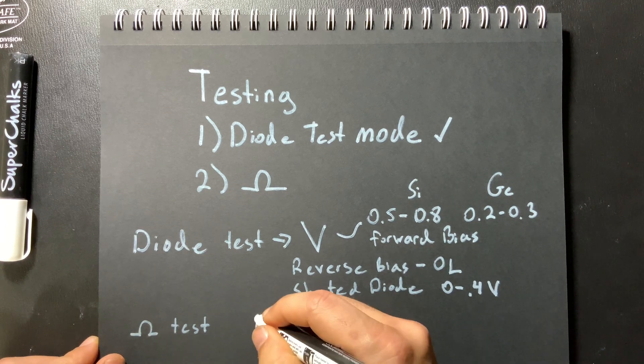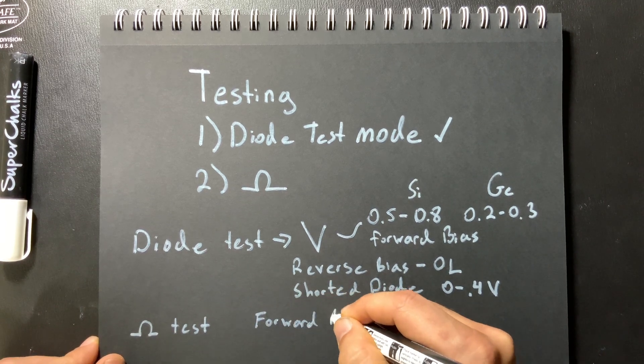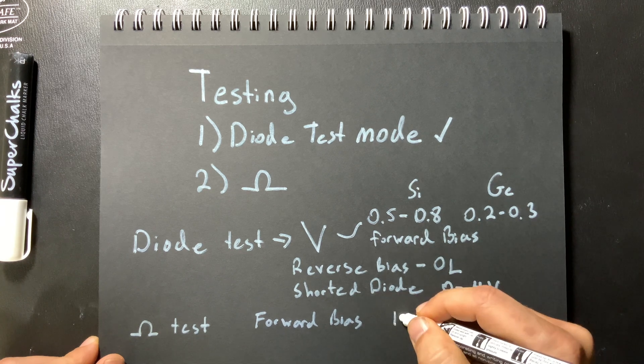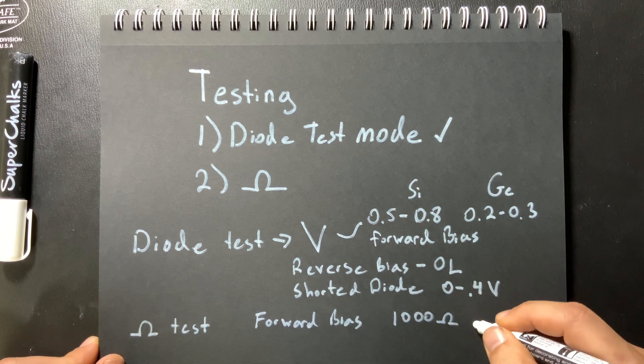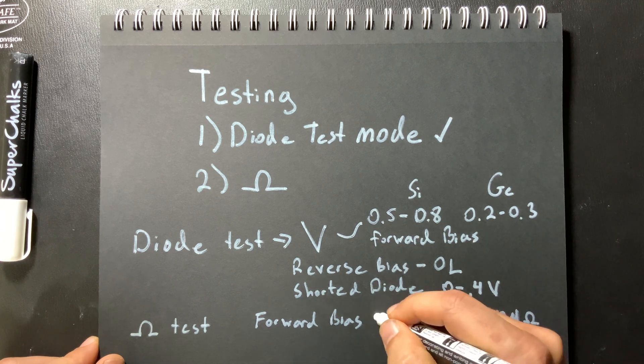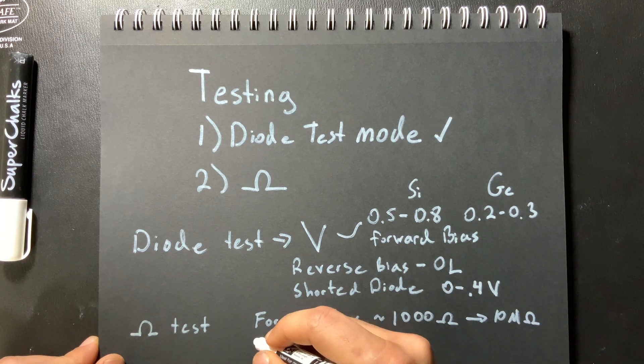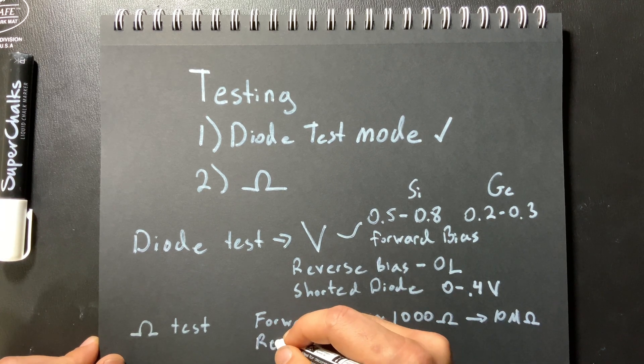In resistance test mode for forward bias you're going to measure a high resistance. A high resistance typically between 1000 and 10 megaohms. For reverse bias you're going to measure open line.